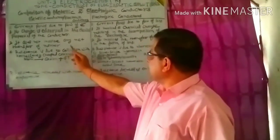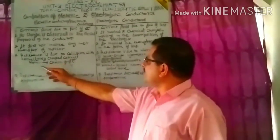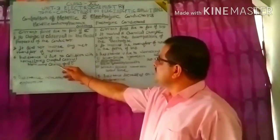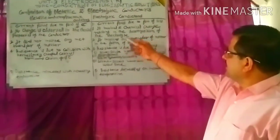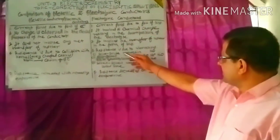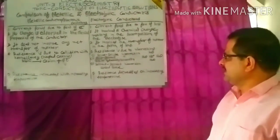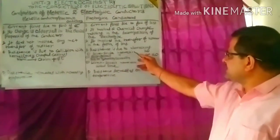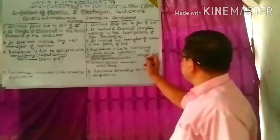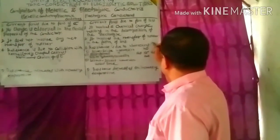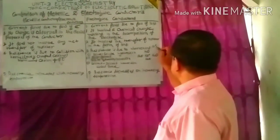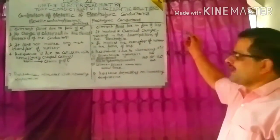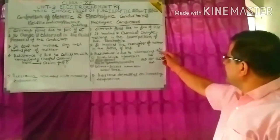In metallic conductors, resistance is due to collision with the kernel — the kernel being positively charged cations. An atom after losing its valence electrons is converted into a cation, which is called the kernel. In electrolytic conductors, resistance is due to interactions, which are of three types: solute-solute interaction (e.g., Na⁺–Cl⁻, cation-cation, anion-anion, or cation-anion interactions).